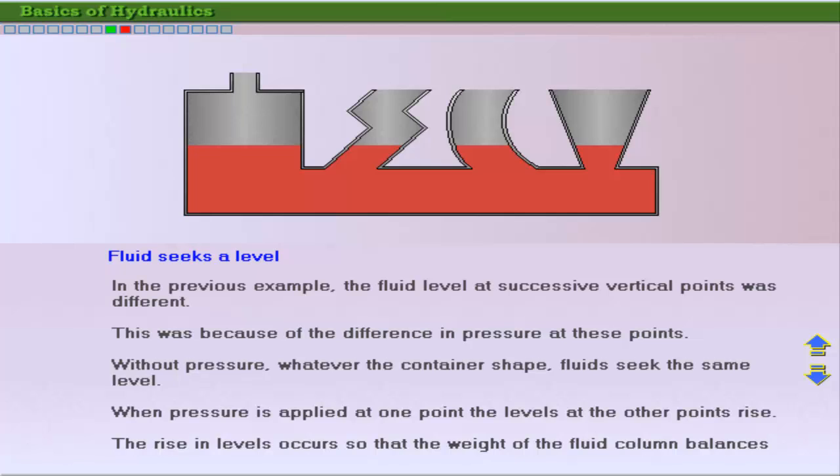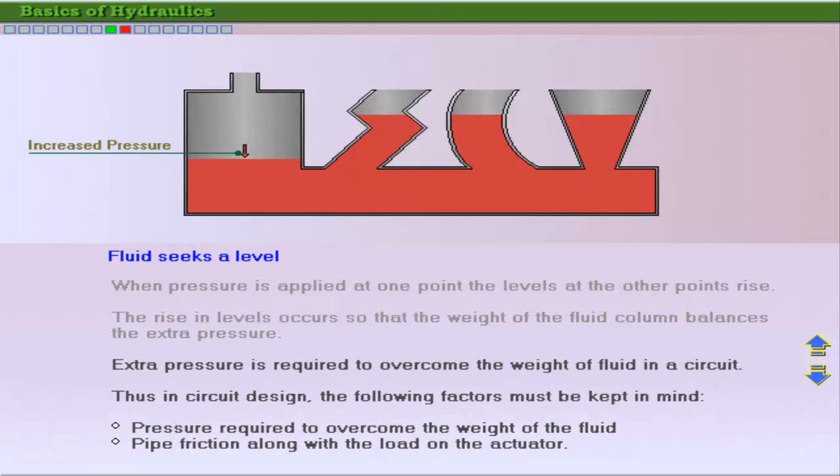In the previous example, fluid level in successive vertical points was different because of the pressure differences at these points. Note that, in the absence of pressure, whatever the shape of the container, fluids seek the same level. When pressure is applied at one point, the levels at the other points rise. The levels at these points rise so that the weight of the fluid column balances the additional pressure.